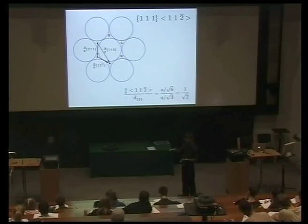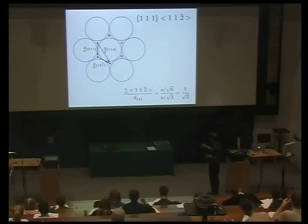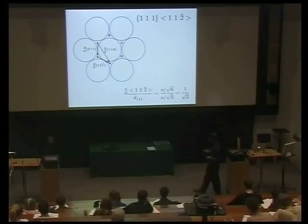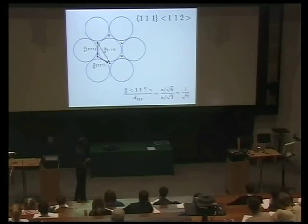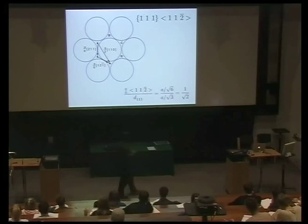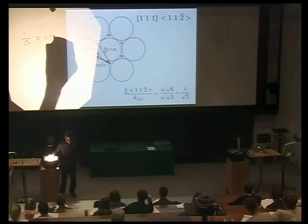The magnitude of A/6 [211] works out to A/√6. The d-spacing of the 111 planes is A/√3. That gives the shear as 1/√2, or approximately 0.7071. It's a huge shear — a strain of 0.7.